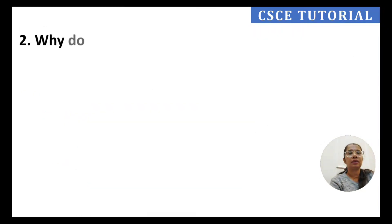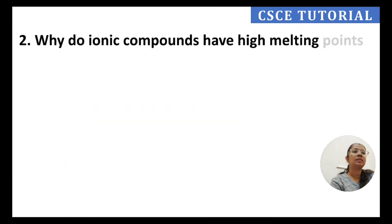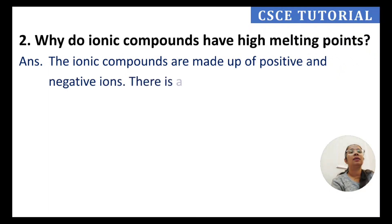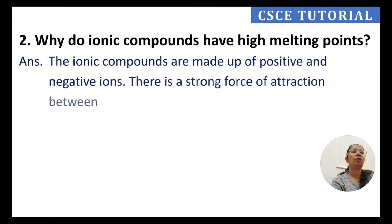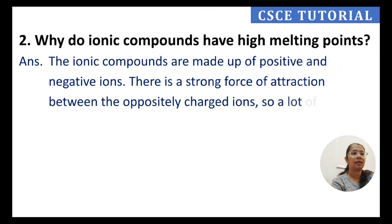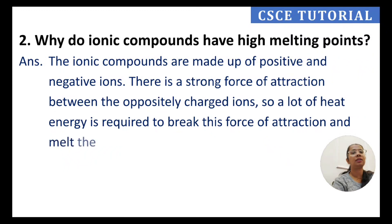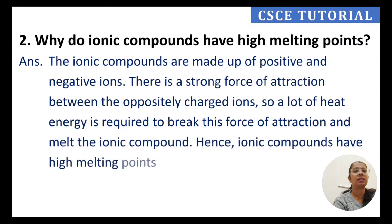Question 2: Why do ionic compounds have high melting points? Ionic compounds are made up of positive and negative ions. There is a strong force of attraction between the oppositely charged ions, and a large amount of heat energy is required to break this force of attraction and melt the compound. Hence, ionic compounds have high melting points.